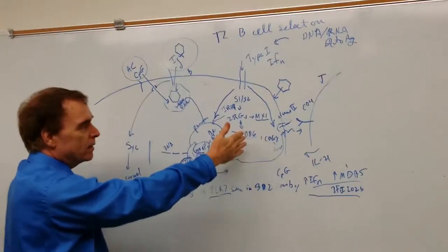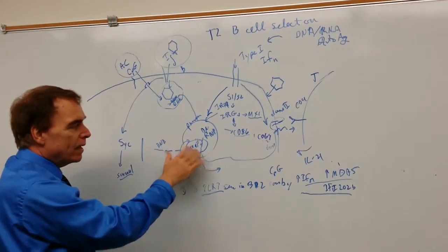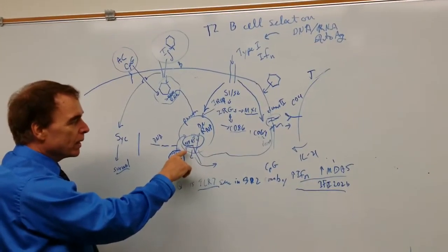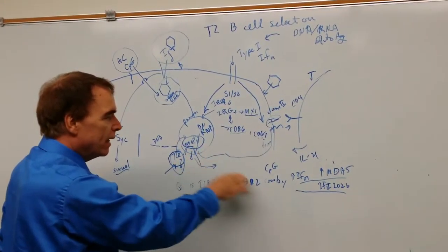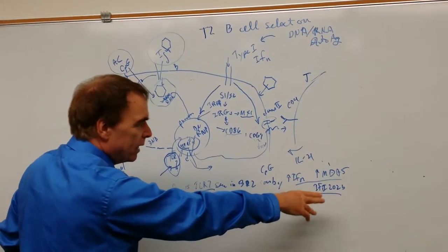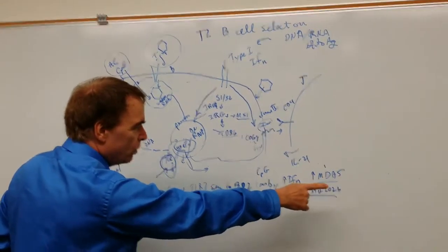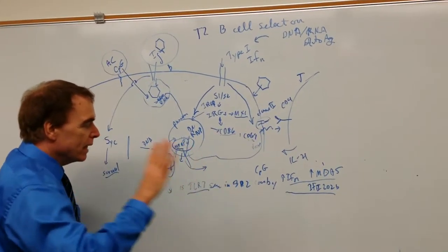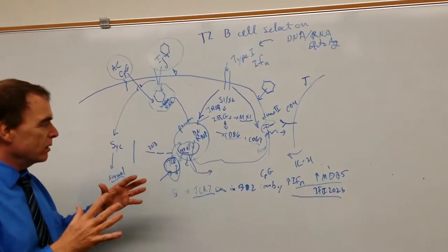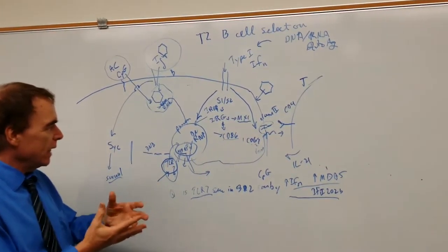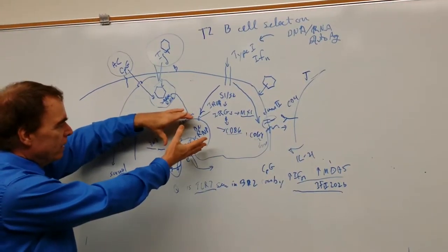Other than CD86 and CD69, they're DNA and RNA sensing molecules like MDA5 and interferon-induced 202B. These genes cause increased responses to DNA and RNA in these endosomes.